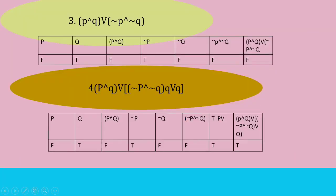For number 3, P is false and Q is true. First, we identify P conjunction Q based on the truth value table. If P is false and Q is true, then for negation of P conjunction Q, we make the statement not false. Then for P and Q disjunction P and Q, the result is false. For number 4, P is false and Q is true. If P is false and Q is true, then P conjunction Q is false. For negation of P and Q conjunction Q, the result is true based on the truth table.